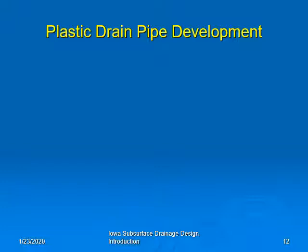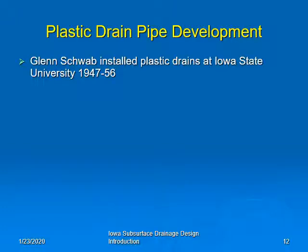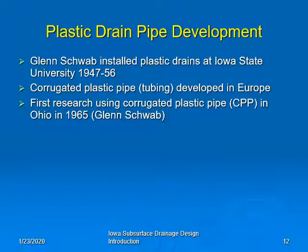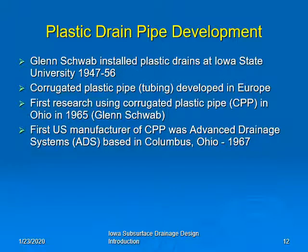In the late 1940s, the development of plastic pipe as a drain material began. Glenn Schwab installed plastic drains at Iowa State University between 1947 and 1956. Corrugated plastic pipe or tubing was developed in Europe, and the first research using this material was done in Ohio in 1965 by Glenn Schwab. The first U.S. manufacturer of corrugated plastic pipe was Advanced Drainage Systems, now known as ADS, based in Columbus, Ohio, in 1967.